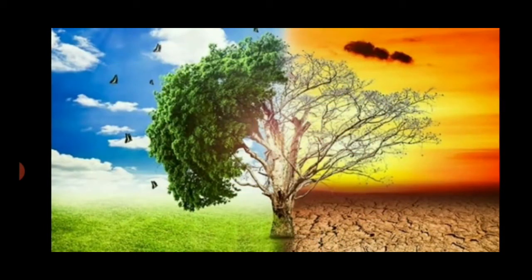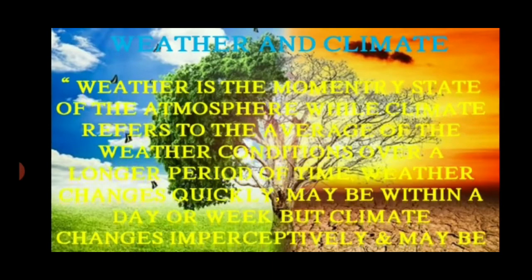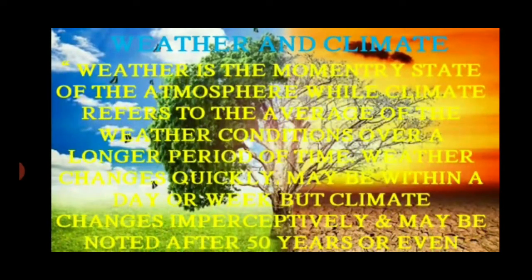Let us first discuss the difference between weather and climate. Weather is the momentary state of the atmosphere, while climate refers to the average of the weather conditions over a longer period of time. Weather changes quickly — maybe within a day or a week — but climate changes imperceptibly and may be noted after 50 years or even more.